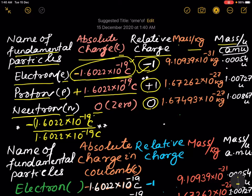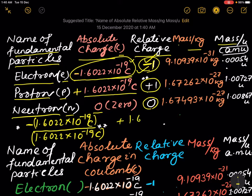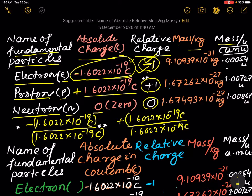When it is divided by the standard value, 1.6022 × 10⁻¹⁹ coulombs, the ratio is minus 1. In the case of the proton, plus 1.6022 × 10⁻¹⁹ divided by 1.6022 × 10⁻¹⁹, the ratio is plus 1. This is the standard or reference value. For neutron, the relative charge is 0.